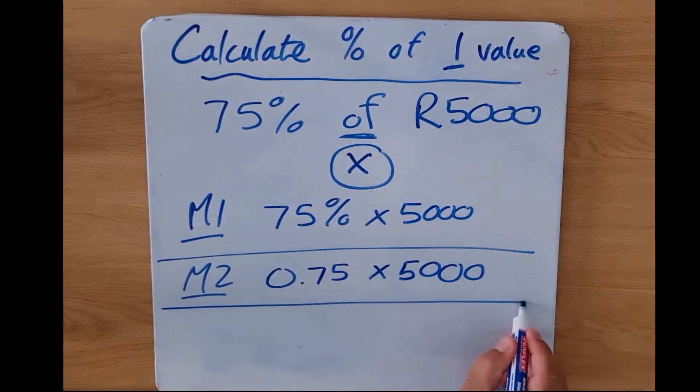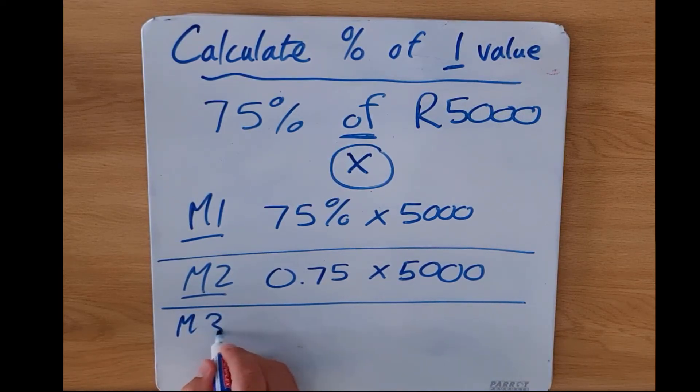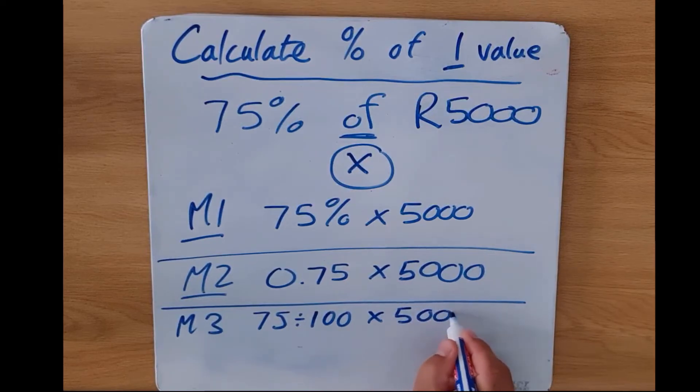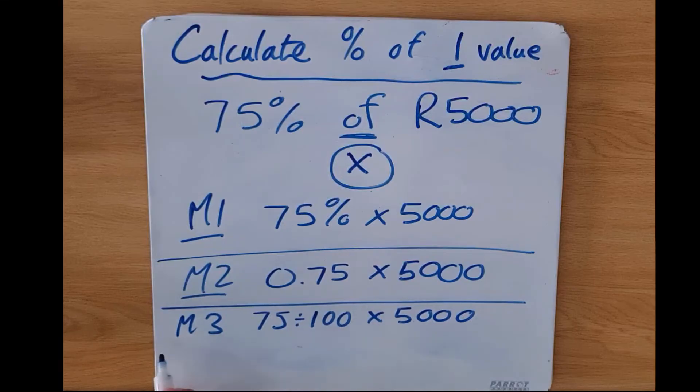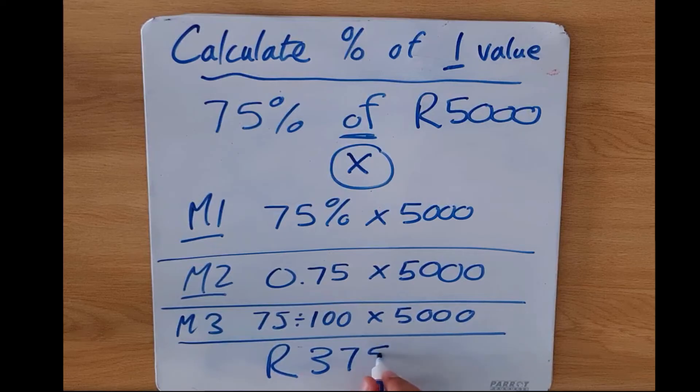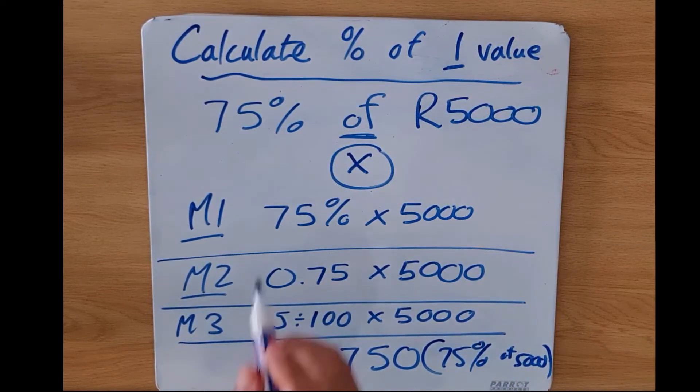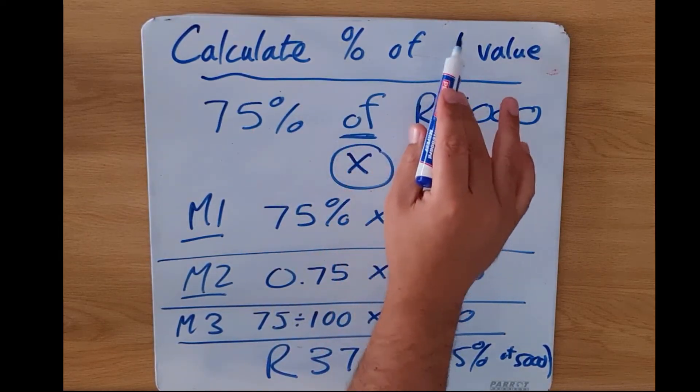Or you could use method three where we would be saying 75 divided by 100 multiplied by 5000. And remember according to BODMAS it will do the division first and then the multiplication. Ultimately you should get an answer of 3750, and that is 75% of our 5000. And that's how we calculate the percentage of only one value.